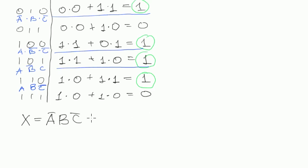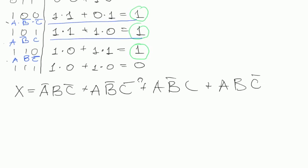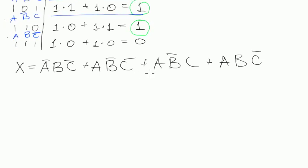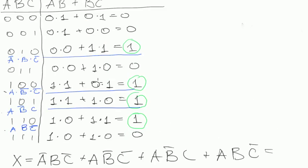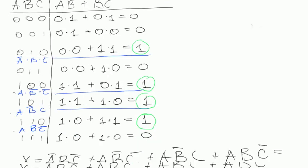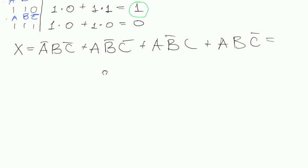Now we write down the sum of these minterms: AB̅C̅, plus AB̅C, plus ABC̅. Let's simplify that in order to practice, because we see it's much more complicated than the initial one, and there is room to simplify.